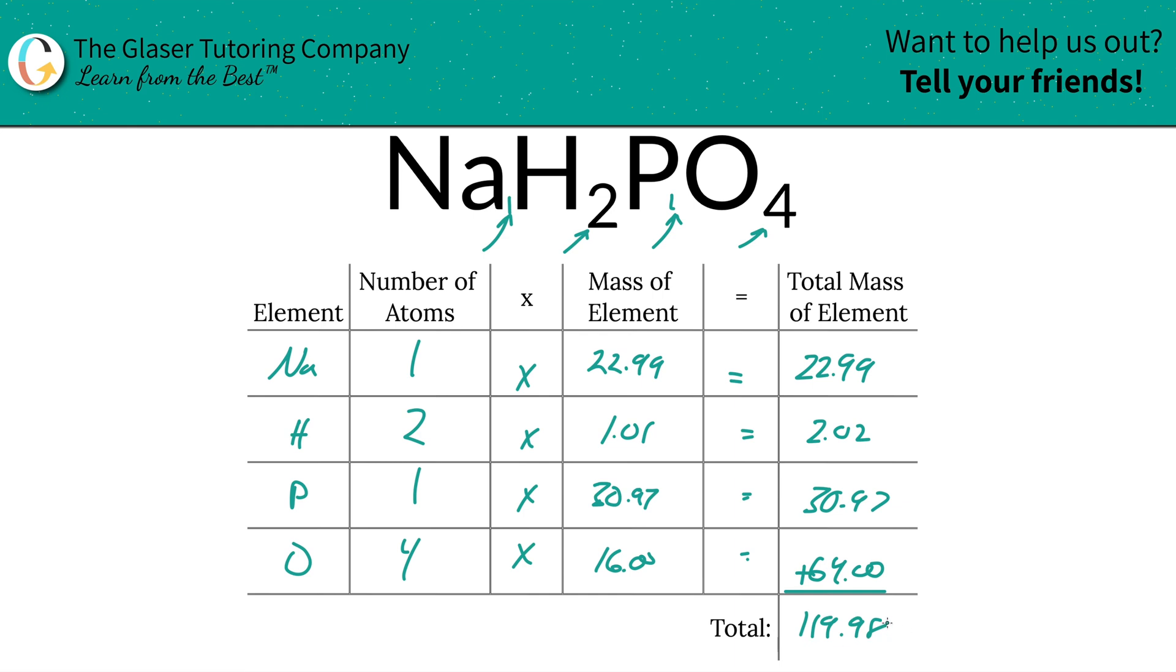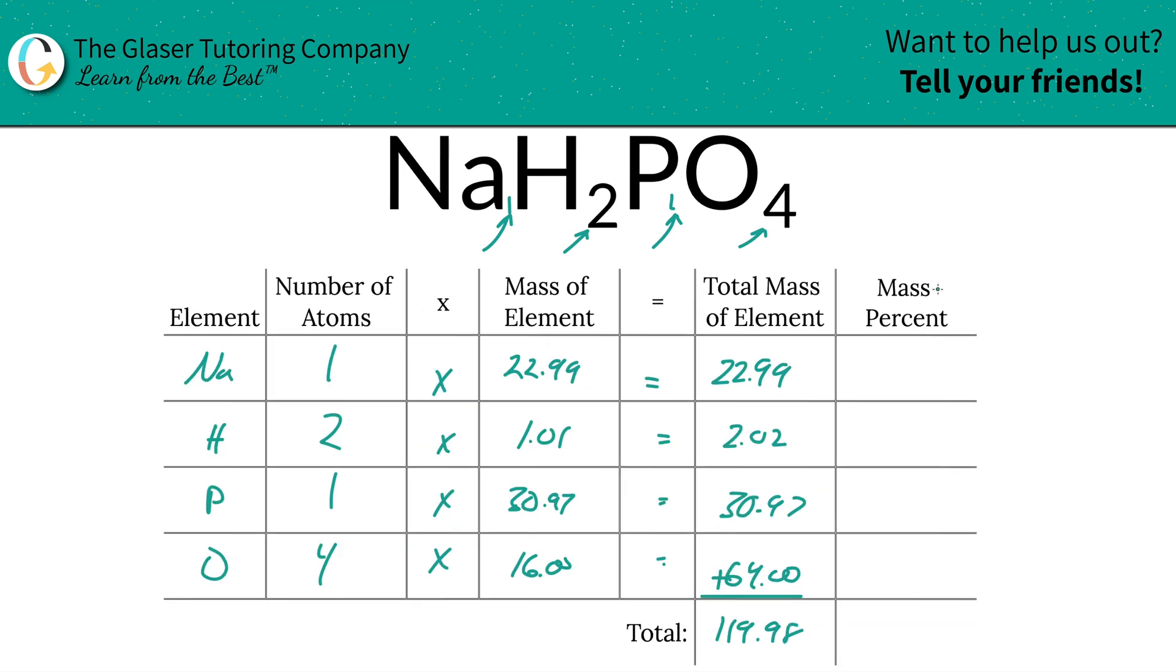And there you have it—that's the total mass. That was the first step of the process. Now from knowing the total mass, I'm going to add a column where we can find those percentages. Watch how simple this is. To find the mass percent of, let's say sodium, we're going to take the total mass of that sodium.